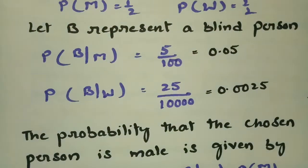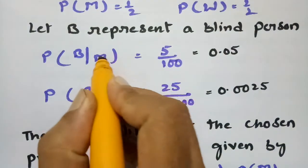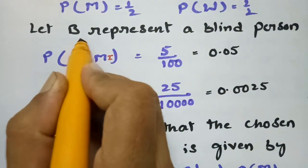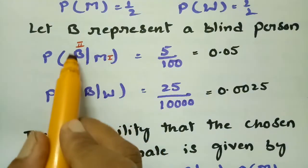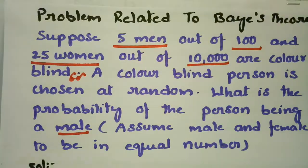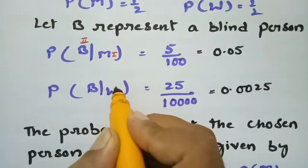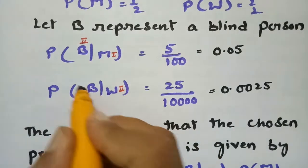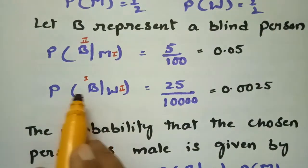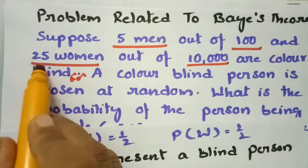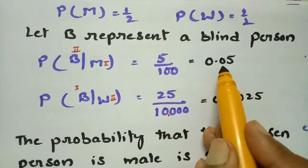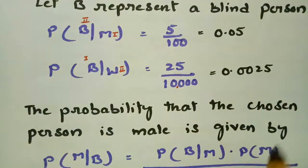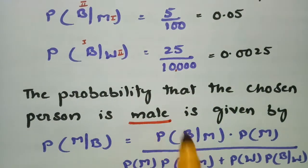Let B represent a colorblind (blind) person. The first condition is that the person is male, and then that the person is colorblind. So the probability of B given male, P(B|M), is 5 out of 100, which equals 0.05. The probability of B given female, P(B|W), is 25 out of 10,000, which equals 0.0025.